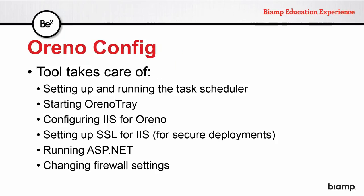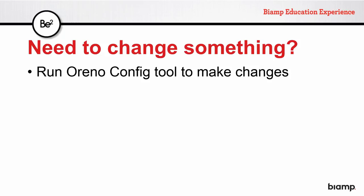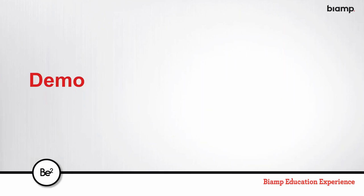The tool called Orino Config takes care of setting up and running the task in Task Scheduler, starting the Orino tray, configuring IIS for Orino, setting up SSL for secure connections, running the ASP.NET, and changing firewall settings. It's pretty much doing everything. And if you need to make any changes in the future, just run the Orino Config tool again to make those changes — you don't need to go into any of those settings individually and start from scratch.